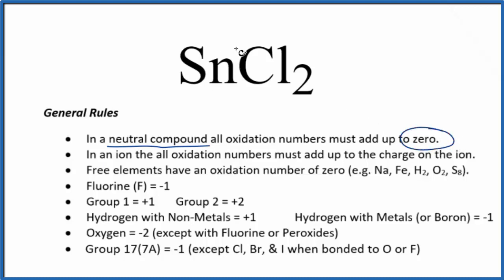Tin, that's a transition metal, so we can't tell its oxidation number just looking at it. We have to look at what it's bonded to. So we go down our list, group 17, chlorine is in group 17.